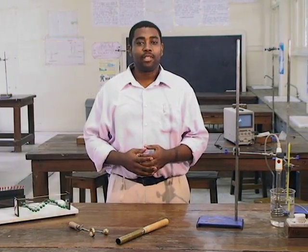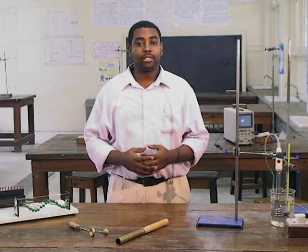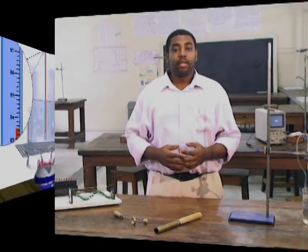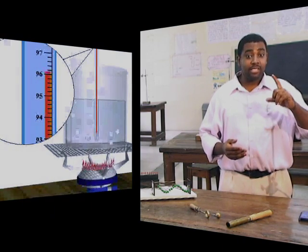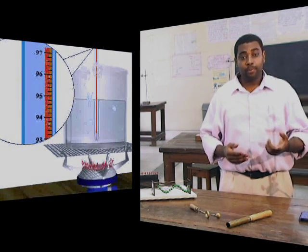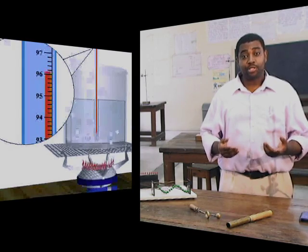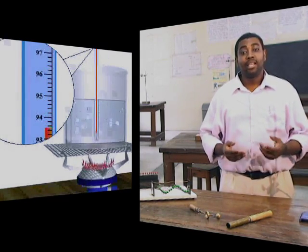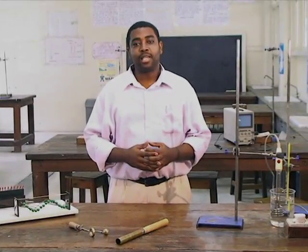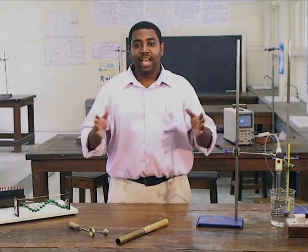In the last lesson, we looked at the mercury in glass thermometer, and we said that when placed in an object which is hot, the mercury rises up the thermometer, and when placed in an object or material that is cold, the mercury falls down the thermometer. This is a very practical example of expansion and contraction.